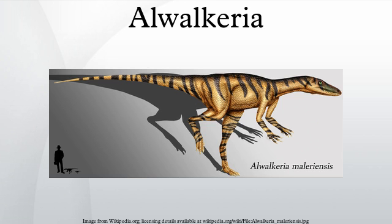The only known specimen, holotype ISIR 306, is incomplete and consists of parts of the front ends of the upper and lower jaws, 28 incomplete vertebrae from all parts of the spinal column, most of a femur, and an astragalus. The partial skull is about 4 cm long.